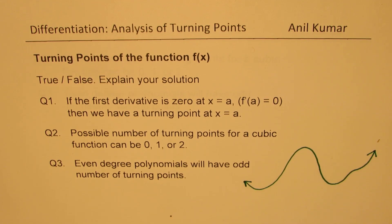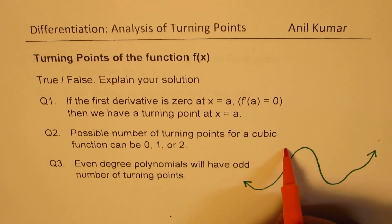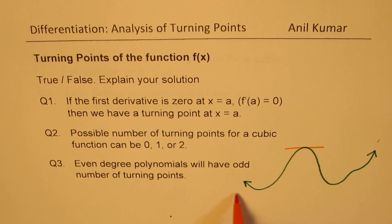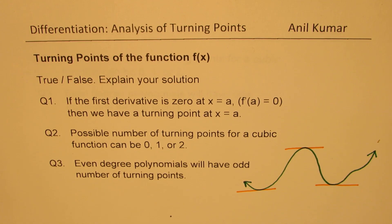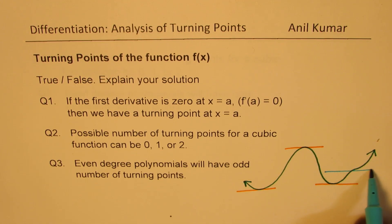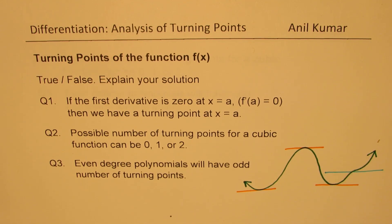If you look at this graph carefully, what do you notice? This has three turning points: turning point number one, turning point number two, turning point number three. At all these points the first derivative is zero. However, we have another point on this graph which is not a turning point, but where the tangent is zero. At this point also, we have a horizontal tangent line.